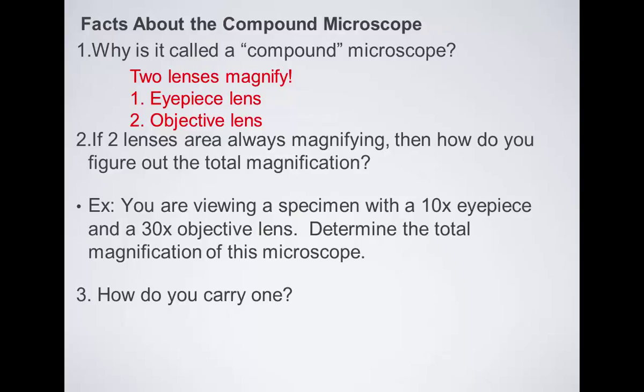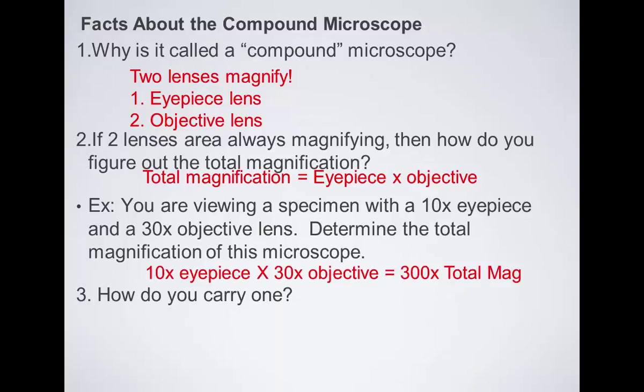So we often want to know, how much is this image being magnified? If I'm looking at an object in the microscope, I want to know how much bigger does it appear to be versus its actual size. We calculate that very simply by multiplying the power of the eyepiece times the power of the objective lens. So if you're viewing a specimen with a 10x eyepiece and a 30x objective lens, what is the total magnification? Sophia? Yeah, it'd be 300x. That means it appears to be 300 times larger than its actual size.